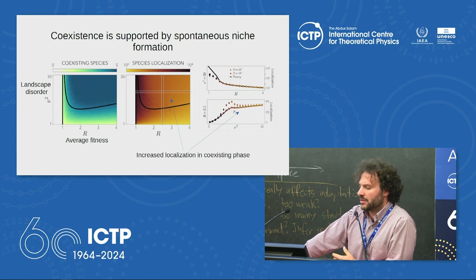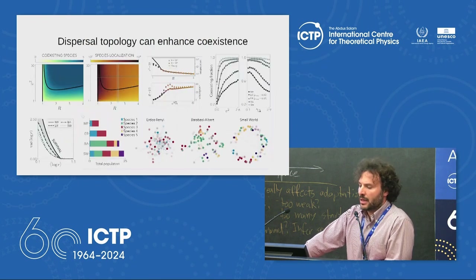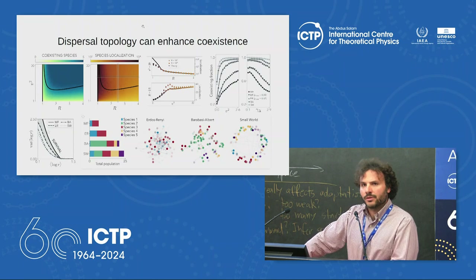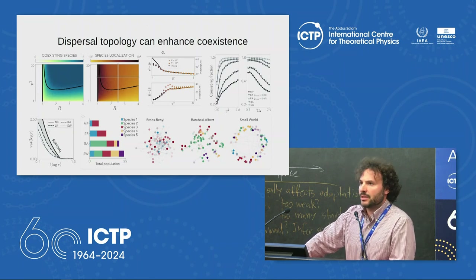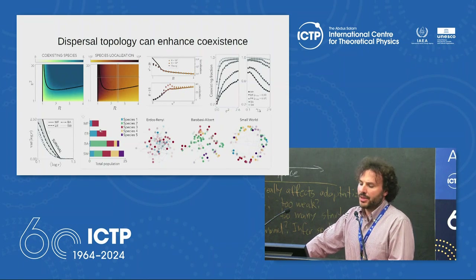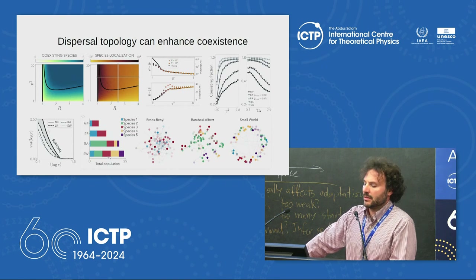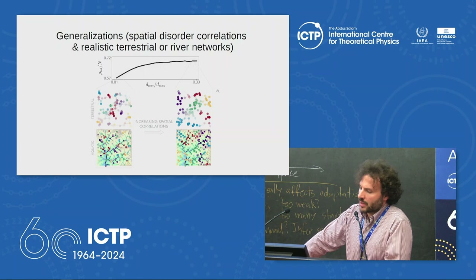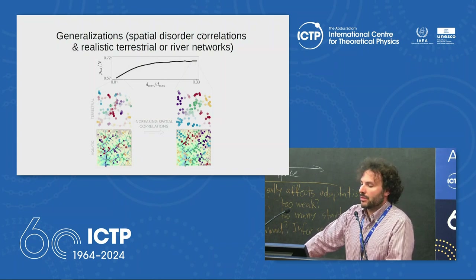However, if landscapes are heterogeneous, stable coexistence is possible. In the mean-field case we showed analytically that there exists a critical landscape disorder strength above which stable coexistence is guaranteed. This coexistence boundary depends on a factor gamma quantifying how diverse species are in average fitness — more diverse species require stronger disorder to coexist. We understood the mechanism as the spontaneous formation of niches, evidenced by increasing localization of species in the coexistence phase.